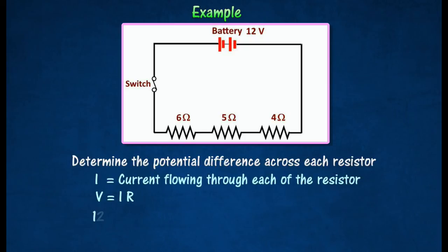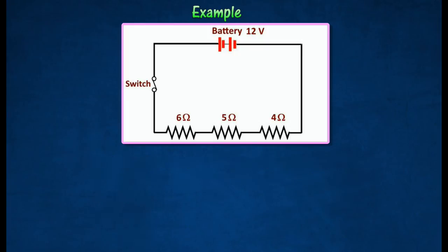Let I be the current flowing through each of the resistors. By applying Ohm's law to the battery, the current flow through the circuit is 0.8 ampere. By applying Ohm's law to each resistor, the potential difference across each resistor can be calculated.